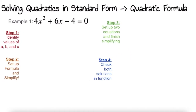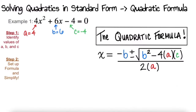The first step is to go into the standard form and establish the values of a, b, and c. For this quadratic, the value of a is 4, the value of b is 6, and the value of c is negative 4. Once you have your values of a, b, and c, all you're going to do is plug them into the formula — a for a, b for b, and c for c.